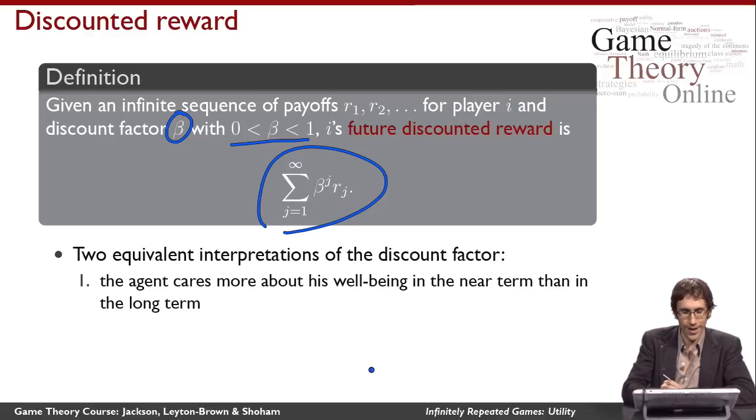is weighted by the discount factor to the power of which payoff in the sequence it is. So I'm going to discount each payoff successively.